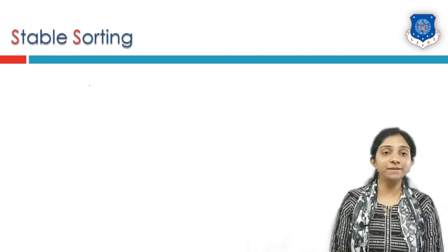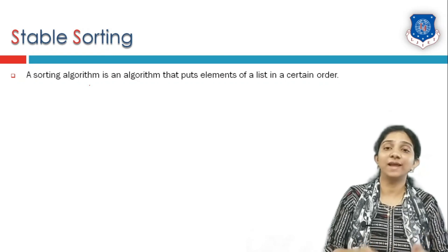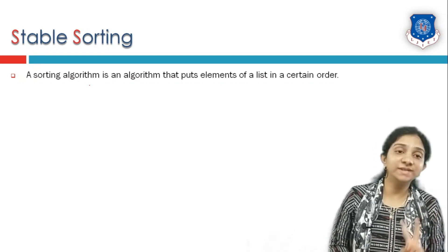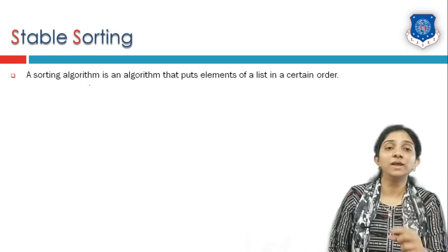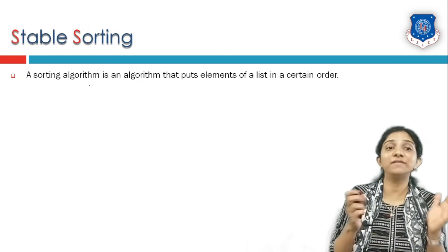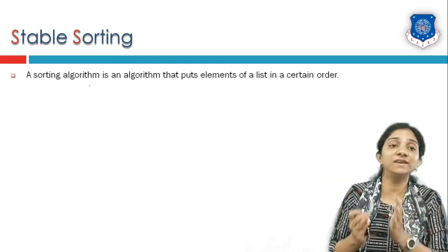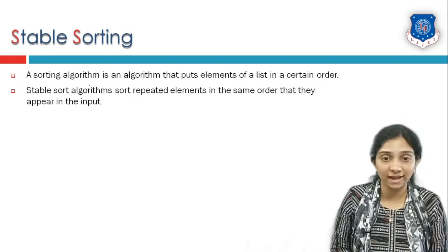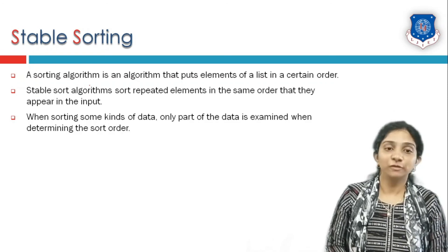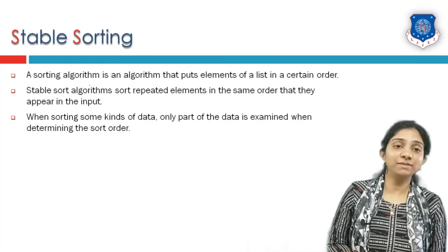The third definition is stable sorting algorithm. A stable sorting algorithm puts elements in a certain order such that repeated elements maintain their original relative order. For example, if element 4 appears at position 1 and also at position 7 in the list, a stable sort ensures the first occurrence still comes before the second occurrence in the output. Stable algorithms sort repeated elements in the same order they appear in the input, examining only part of the data to determine sort order.